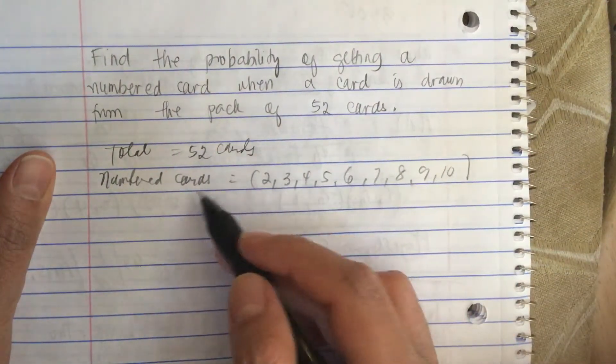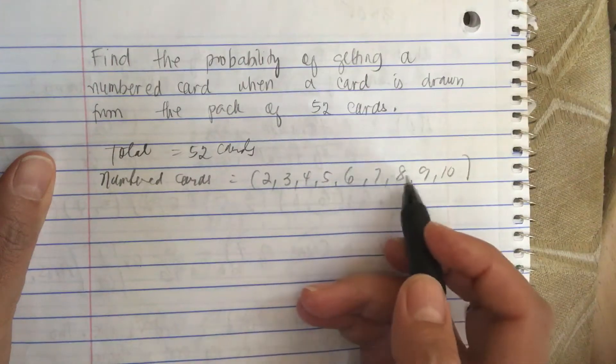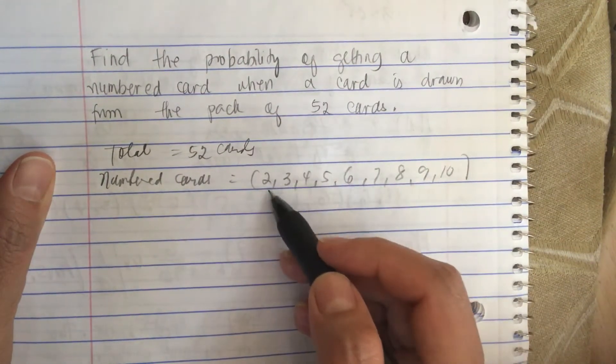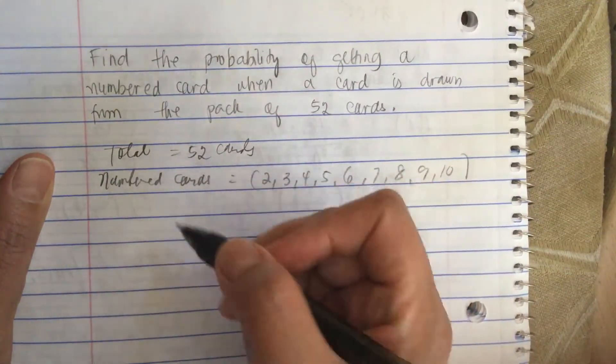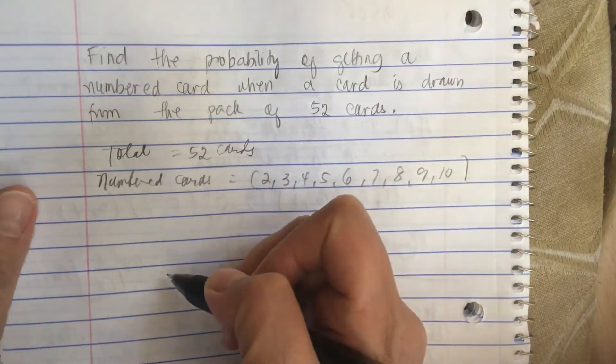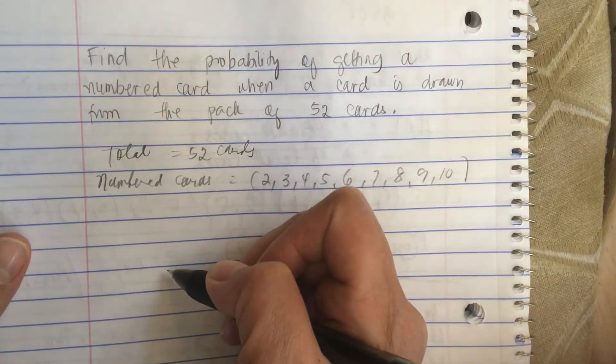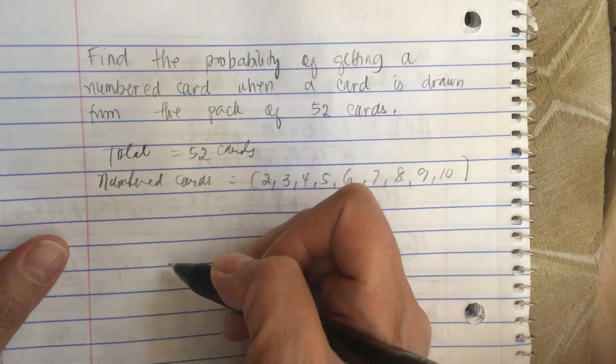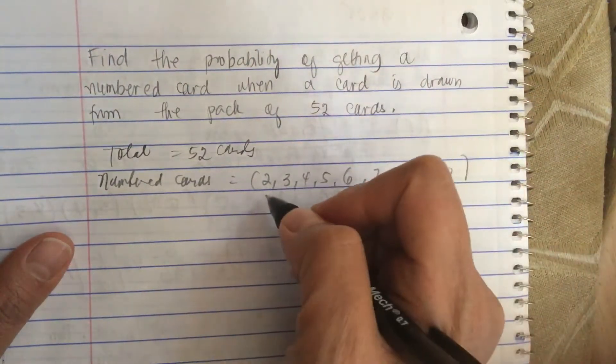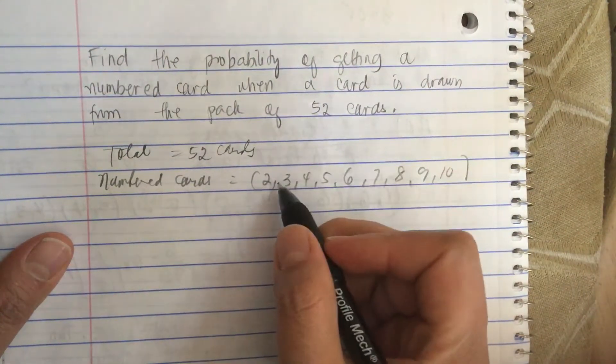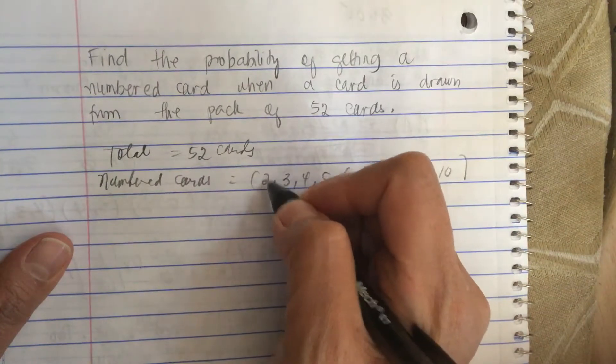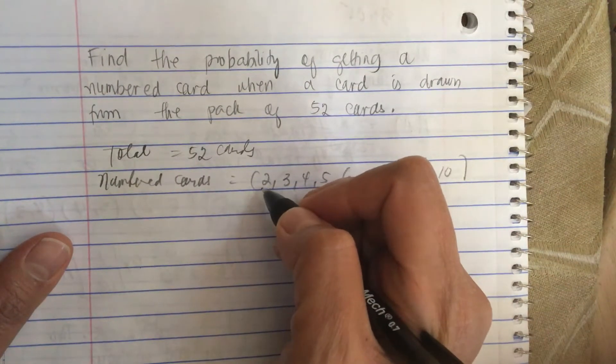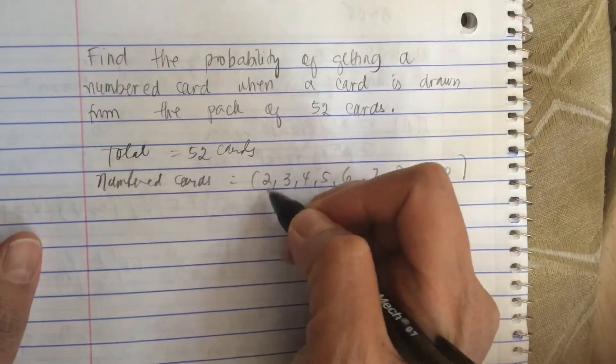So here are the numbered cards: 2, 3, 4, 5, 6, 7, 8, 9, 10. And each of these, there are 4 of these. So there are 4 twos—club, spade, heart, and diamond.